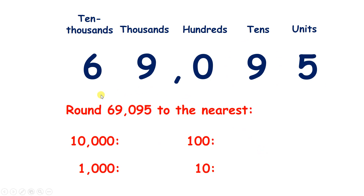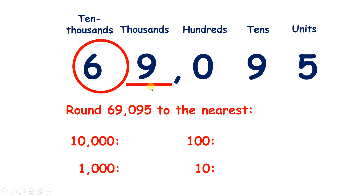Now we have 69,095. Rounding to the nearest 10,000 means we find the place, look next door — it's 5 or more, so we need to raise that 6 to a 7, and put zeros to the right of our place value column — so we have 70,000.